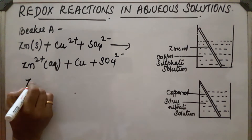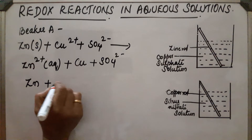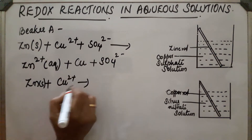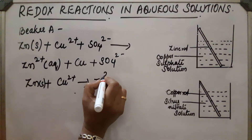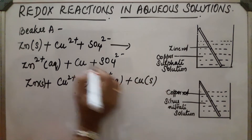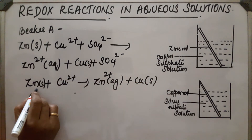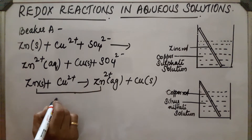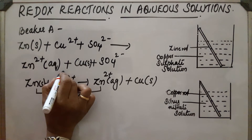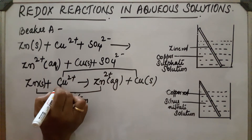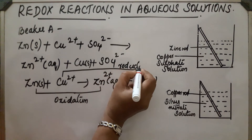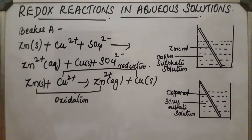So the net ionic reaction is: Zn + Cu²⁺ → Zn²⁺ + Cu(s). Sulfate is a spectator ion and does not take part in the reaction. In this reaction, zinc gets oxidized — this is the oxidation half — and copper gets reduced. Copper acts as the oxidizing agent and the reaction is reduction.